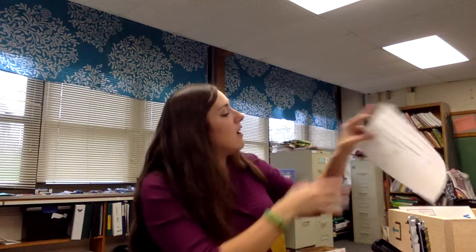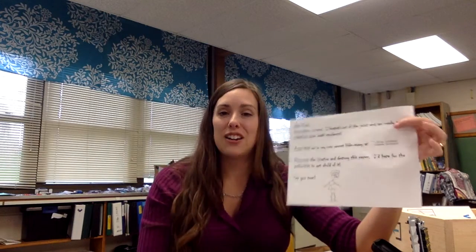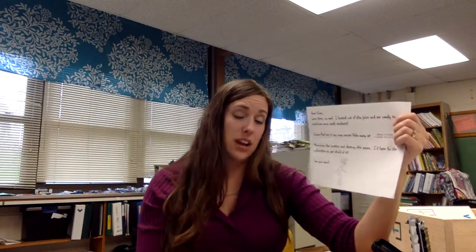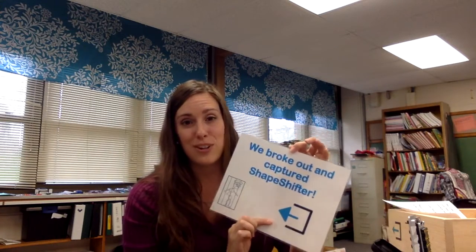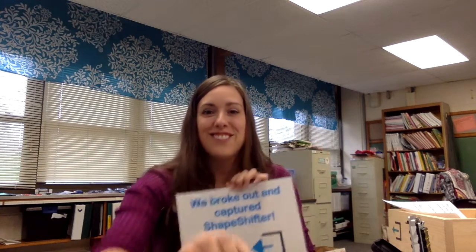That is the Shapeshifter escape walkthrough. When they break out, they will get a letter that Shapeshifter has written to his crew. It says: memorize the location and destroy this paper — I'd hate for the authorities to get a hold of it. But we'll turn him in, and then we will take a picture and brag that we broke out and captured Shapeshifter. Good luck!